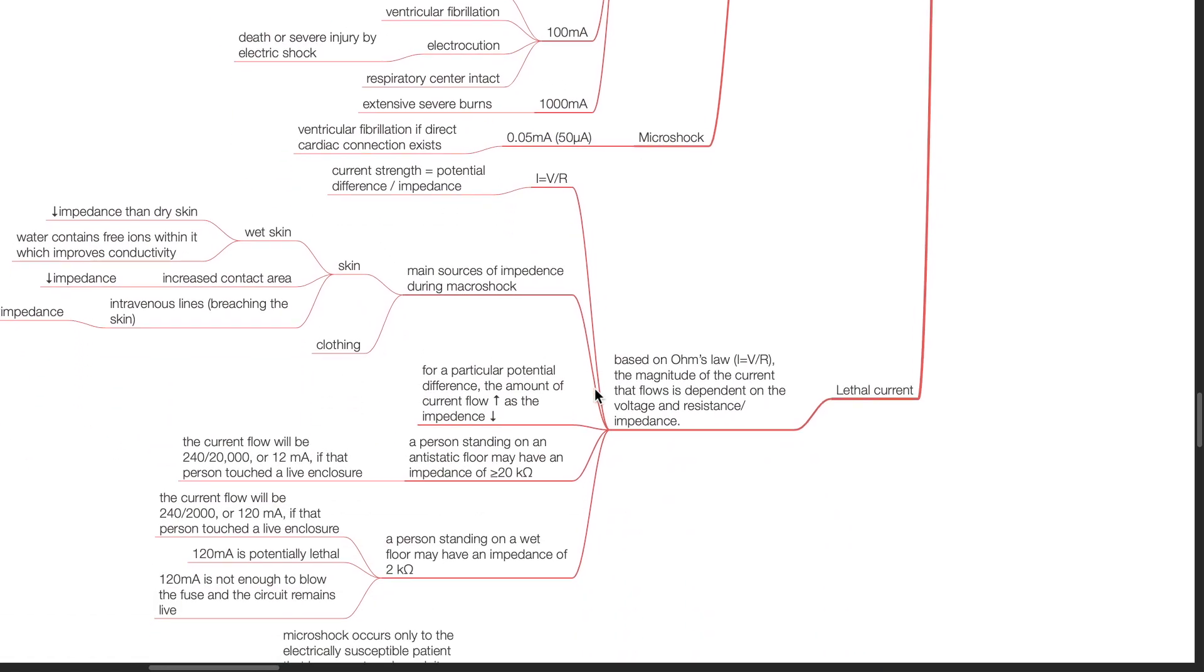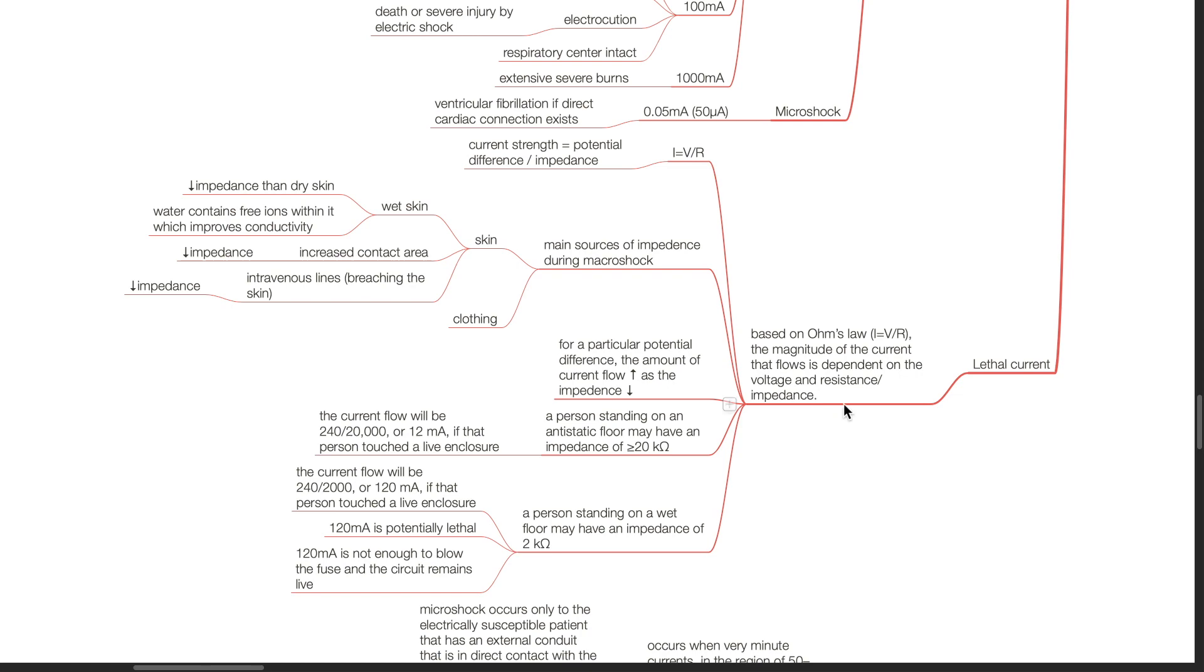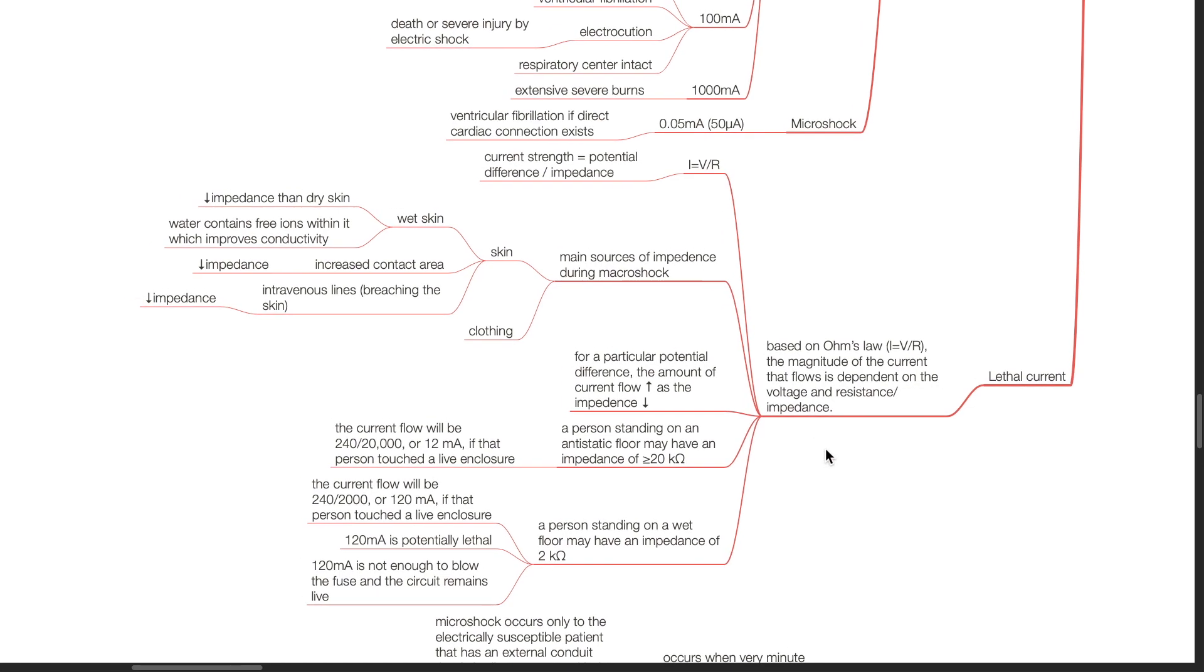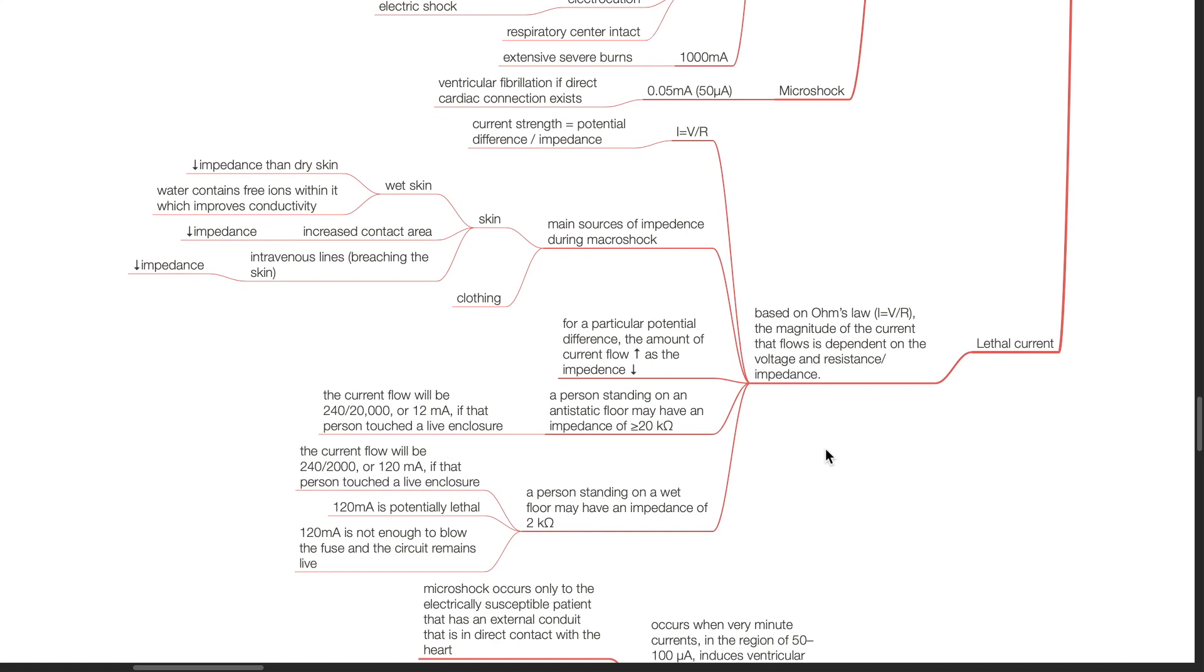Lethal current. Based on Ohm's law, I equals V divided by R. The magnitude of the current that flows is dependent on the voltage and the resistance or impedance. Main sources of impedance during macroshock include the skin and clothing as mentioned previously. For a particular potential difference, the amount of current flow increases as the impedance decreases. A person standing on an anti-static floor may have an impedance of more than 20,000 Ohms. The current flow will be 240 divided by 20,000 or 12 mA if that person touched a live enclosure.